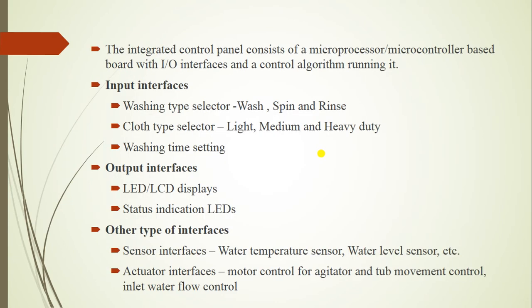Now we are going to see the input interfaces, output interfaces, and other interfaces connected to the washing machine. Input interfaces include: washing type selector — wash, spin, or rinse (wash is used to wash clothes, spin means it rotates, and rinse means it rinses the clothes).